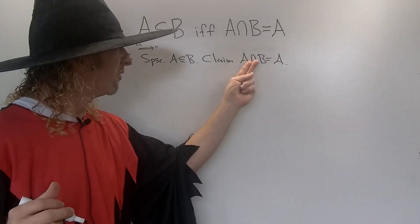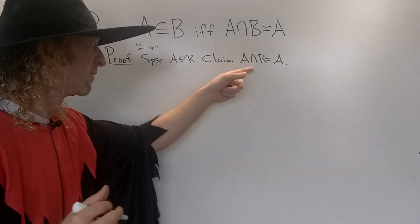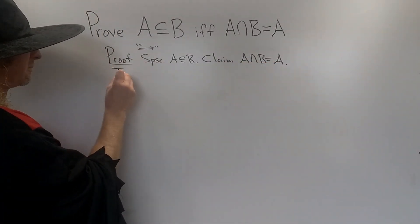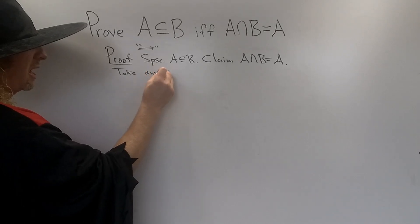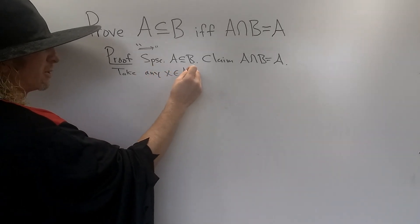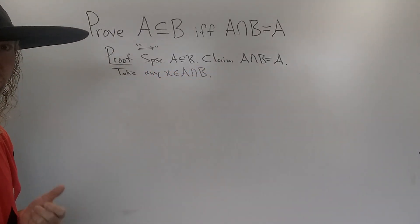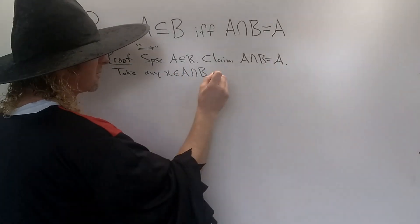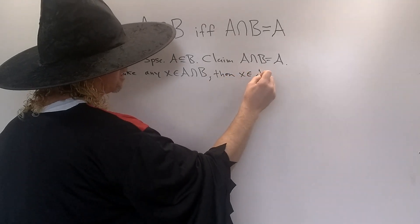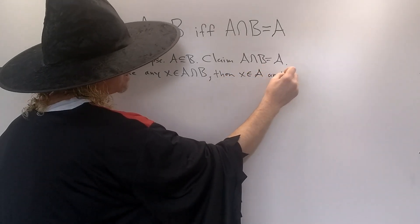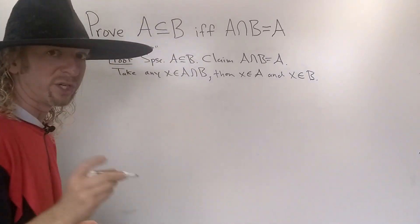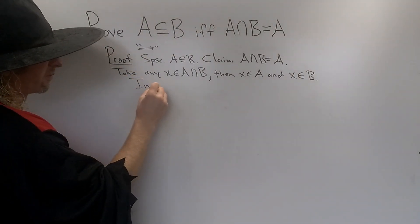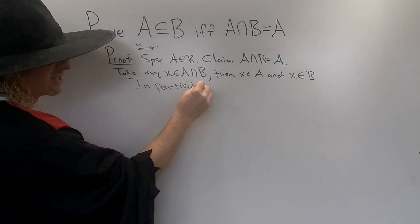Double inclusion means we'll show A ∩ B ⊆ A and that A ⊆ A ∩ B. To show A ∩ B ⊆ A, take any x in A intersection B. What does it mean for x to be in the intersection? It means x is in A and x is in B — it's in both sets. We just want it to be in A, so in particular, x is in A.